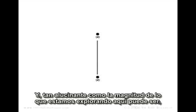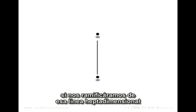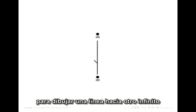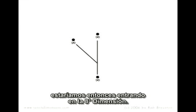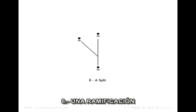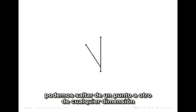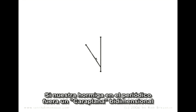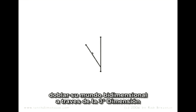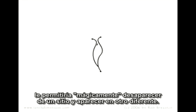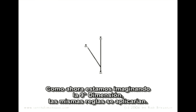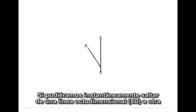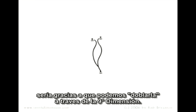As boggling as the magnitude of what we're exploring here might be, if we were to branch off from that seventh-dimensional line to draw a line to yet another infinity, we'd then be entering the eighth dimension. We can jump from one point in any dimension to another simply by folding it through the dimension above. As we're now imagining the ninth dimension, the same rules would apply — if we were to instantaneously jump from one eighth-dimensional line to another, it would be because we're able to fold through the ninth dimension.